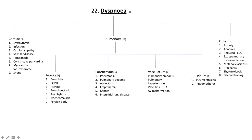Under vasculature there are four: pulmonary embolus, pulmonary hypertension — according to the WHO classification there are five classes: class one is pulmonary arterial hypertension; class two is due to left-sided heart dysfunction (previously called venous hypertension); class three is due to hypoxemia such as COPD or alveolar hypoventilation syndromes; class four is associated with thromboembolic disease; and class five is the miscellaneous group including vasculitides and AV malformation.